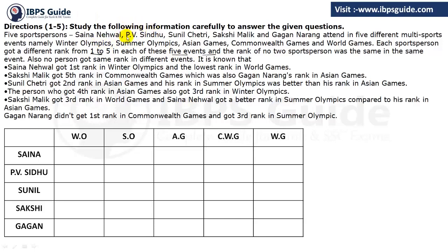Now let's see the solution. PV Sindhu is participating in all five events, so she gets five different ranks in all the games — rank 1, 2, 3, 4, and 5 across the games. The rank of no two sportspersons was the same in the same event, meaning PV Sindhu and Sunil Jethani cannot both have rank 1 in Winter Olympics or any other game.